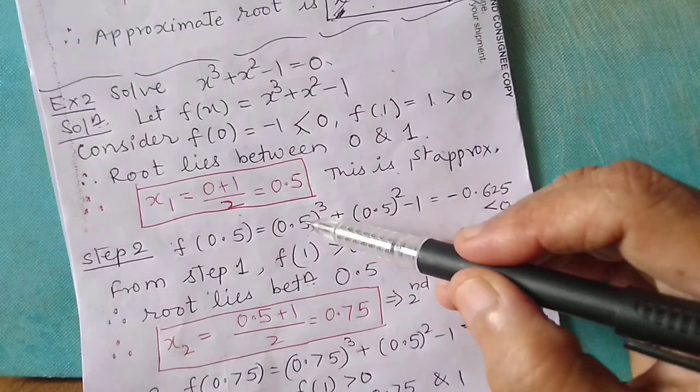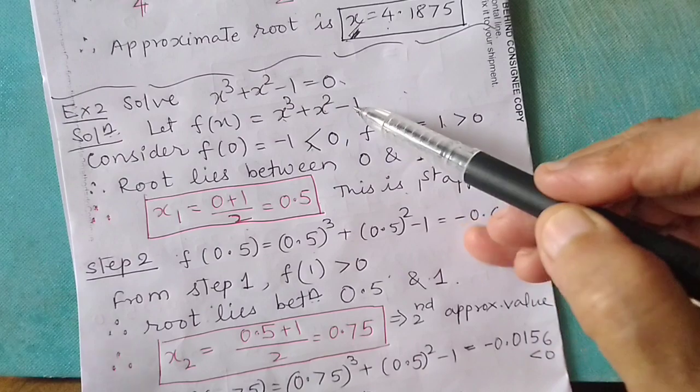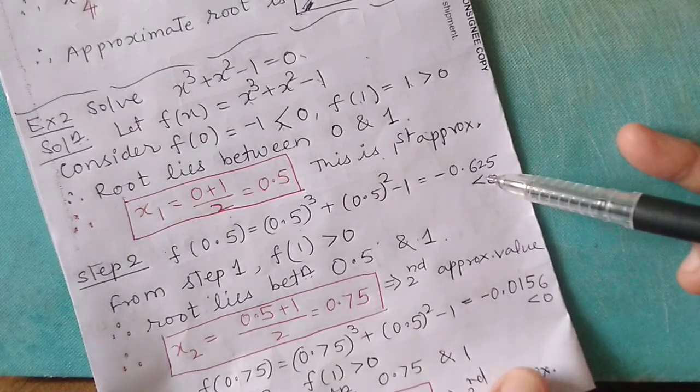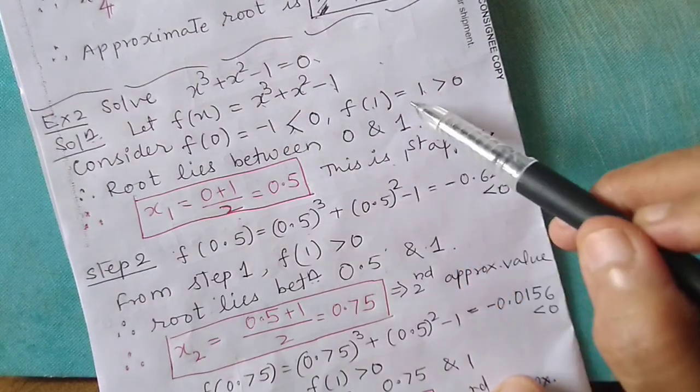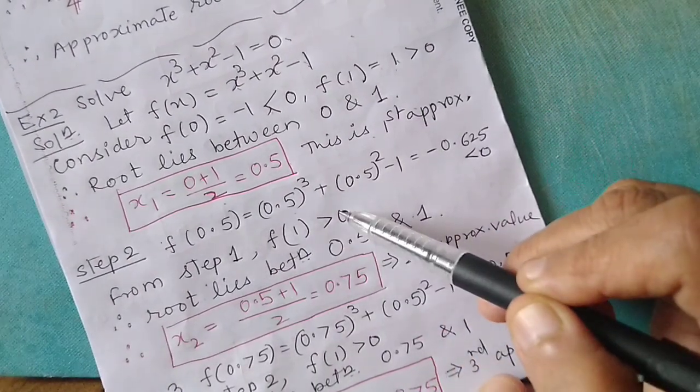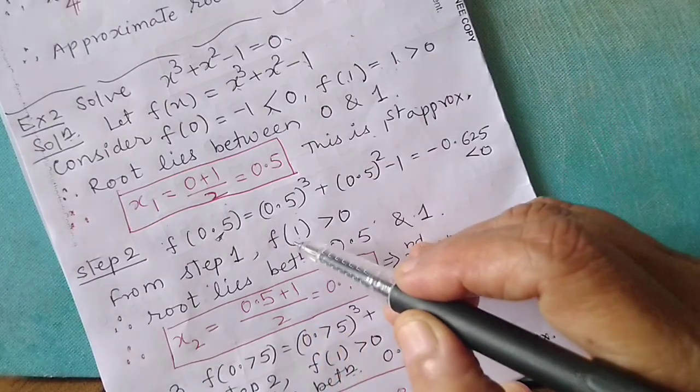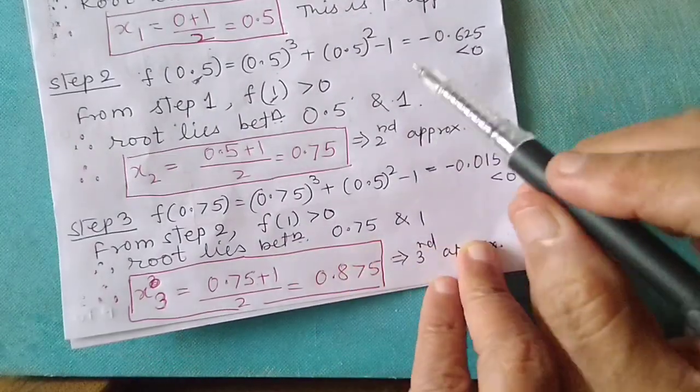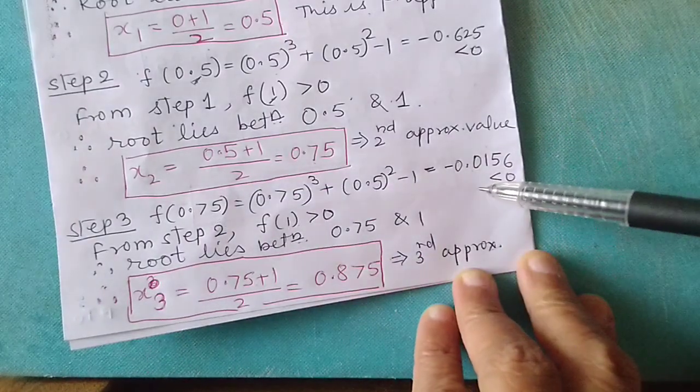The average gives 0 plus 1 upon 2, which equals 0.5. This is the first approximation. f of 0.5 is found by substituting: 0.5 cube plus 0.5 square minus 1 equals minus 0.625, which is less than 0. Since this is less than 0, we look where it is greater than 0, which is f of 1. From step 1, f of 1 is positive, so the root lies between 0.5 and 1, giving 0.75 as the second approximation.